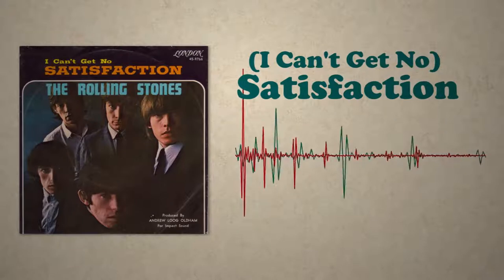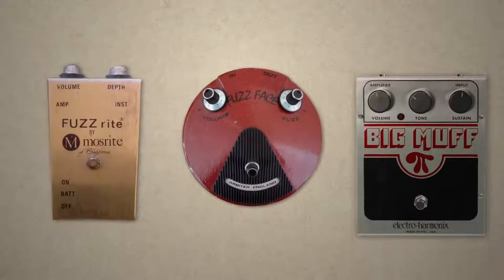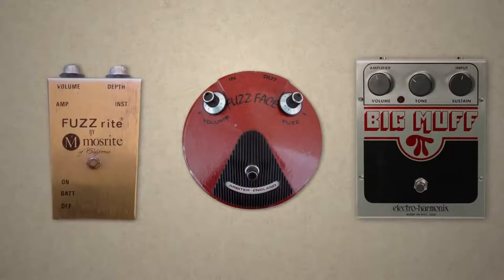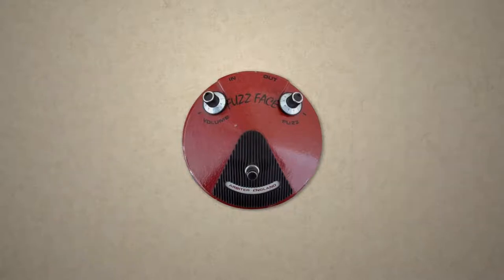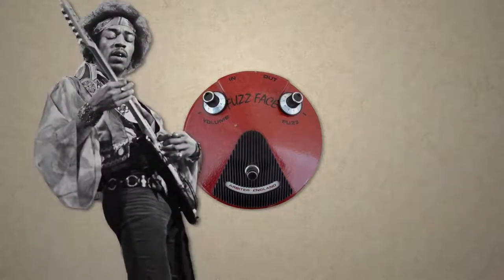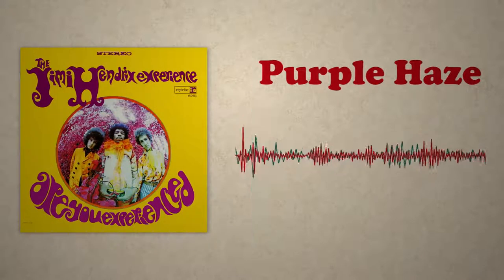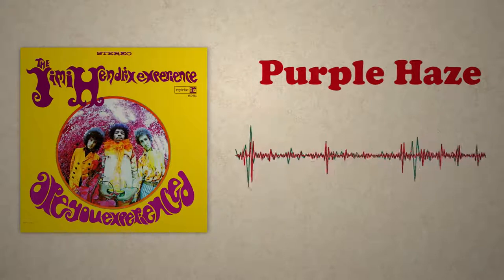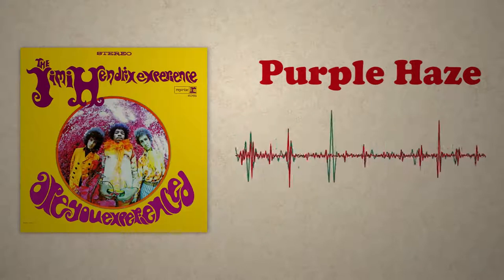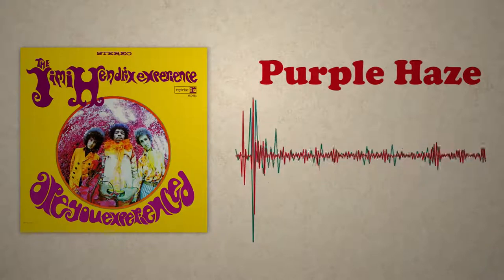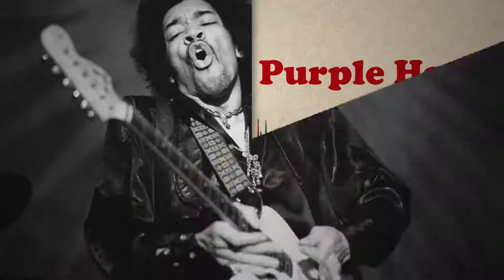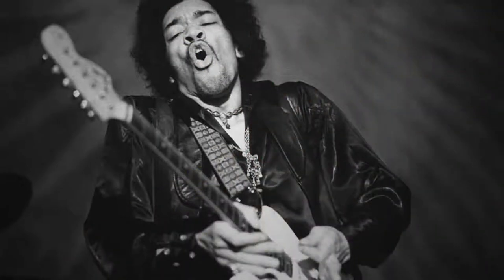This riff single-handedly vaulted the fuzz box into common usage, and soon enough, imitators were coming and creating their own take on the equipment. One of the first to do so was Ivor Arbiter, who created the Arbiter Fuzz Face. A young man named Jimi Hendrix picked up one of these and used it on his band's debut album. When Are You Experienced opened with the manic, psychedelic distortion of Purple Haze, there was no turning back. Thanks to his guitar tech Roger Mayer, Hendrix would continue to innovate with distortion, playing around with new combinations of amps and fuzz boxes to push distortion like none before him.